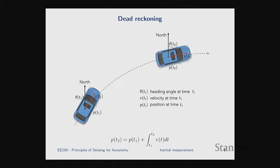The way dead reckoning works: a robot moving on some trajectory gets, at each point in time, the velocity vector relative to some global external frame of reference — say, geographic north. That velocity vector tells you direction and amount of movement per time step. You integrate from some initial position at t1 to get position at t2, and by continuously integrating you do dead reckoning. If you don't have continuous functions you can discretize this and do discrete integration over time.